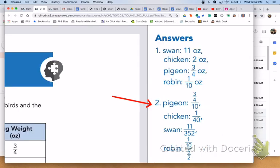For number 2, here are the ratios of egg weight to mother's weight for each bird. For the pigeon, we have 3 fourths to 10, the chicken 1 to 40 or 2 to 80, the swan 11 to 352, and the robin 1 tenth to 5 halves.